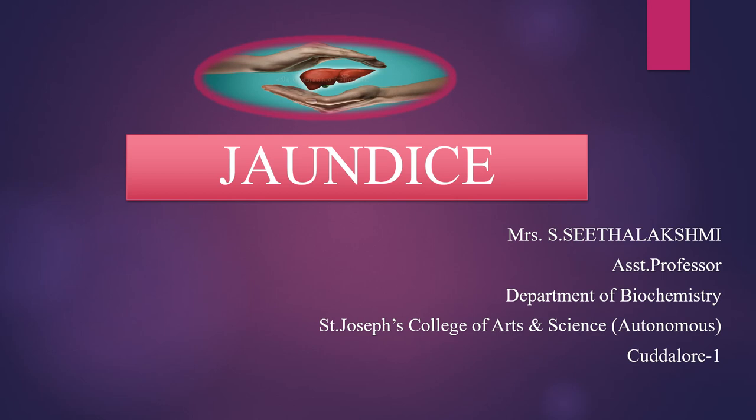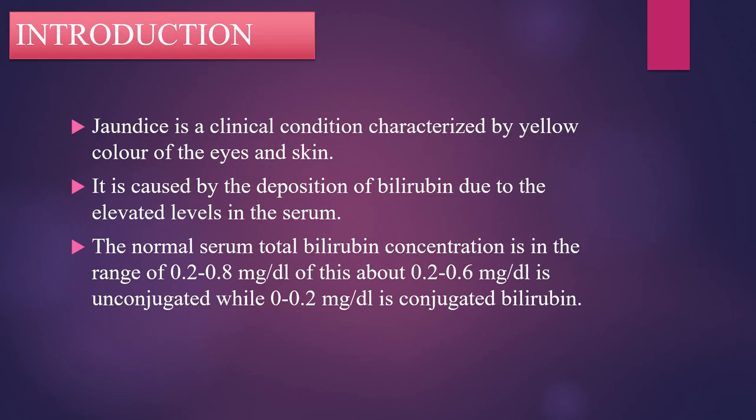Dear students, in this video, we are going to see about jaundice. Jaundice is a clinical condition characterized by yellow color of the eyes and skin. It is caused by the deposition of bilirubin due to elevated levels in the serum. The normal serum total bilirubin concentration is in the range of 0.2 to 0.8 mg per dl.